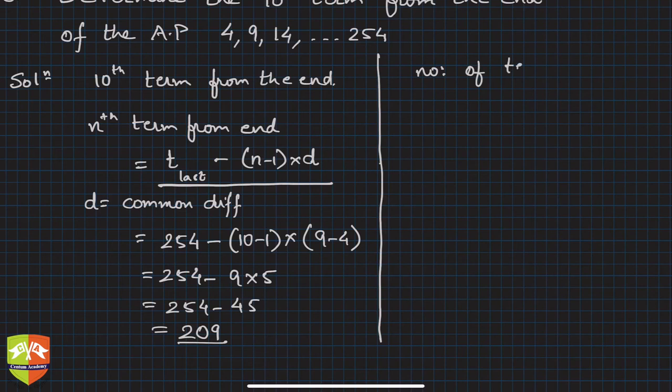Number of terms is equal to what? 254 is the last term, t_1 is 4, plus let's say m is the number of terms in the AP, so (m-1) into 5. The last term is first term plus (m-1) times d.